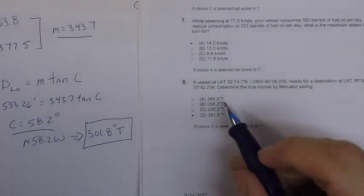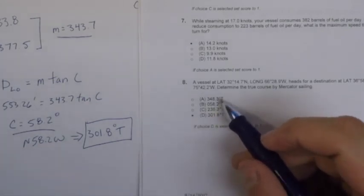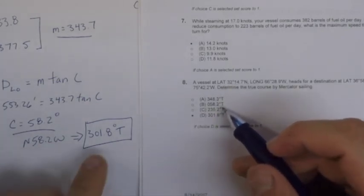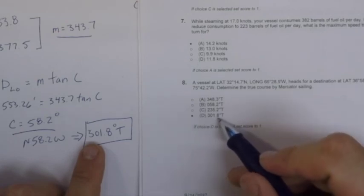So looking at the answers provided by the Coast Guard, they're trying to trick you there. They're going to give you the course angle, but that's clearly wrong based on where you start and where you end. So that should be a clue to make sure you get the course angle right. So our answer of 301.8 degrees true is correct.